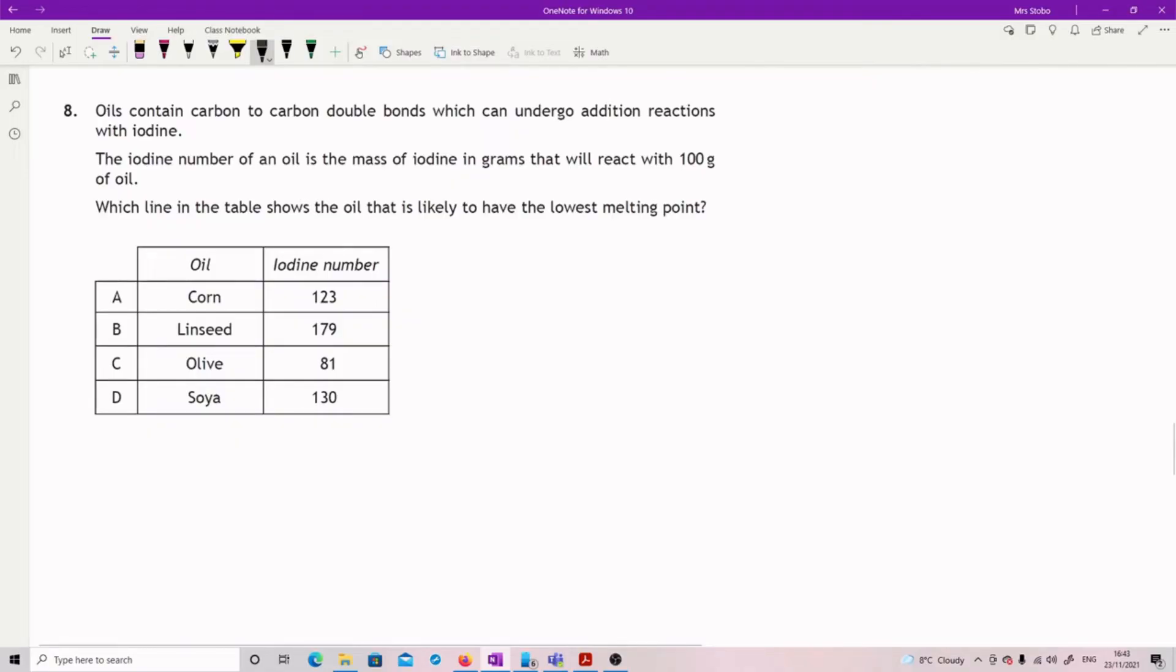Question eight: oils contain carbon to carbon double bonds which can undergo addition reactions with iodine. The iodine number of an oil is the mass of iodine in grams that will react with 100 grams of oil. Which line in the table shows the oil that is likely to have the lowest melting point?